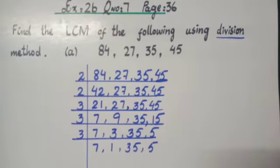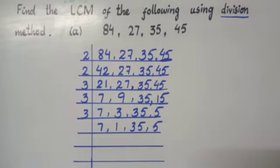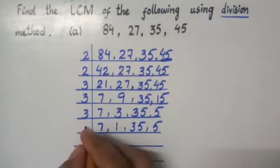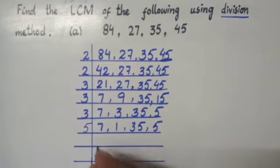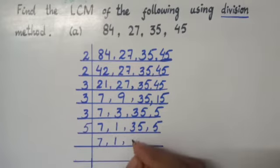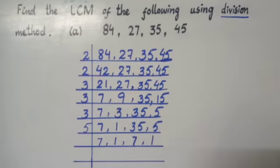I have to draw some more lines here. With 4, yahaan koi bhi number solve nahi ho sakta. So, I have to try with 5. Let's write 5 here. 7 solve nahi ho sakta, so 1 as it is copy down ker diya. 5 7s are 35, giving us 7. And 5 1s are 5, giving us 1.